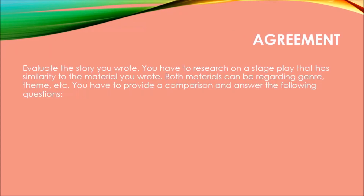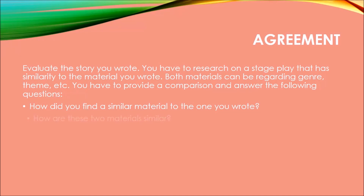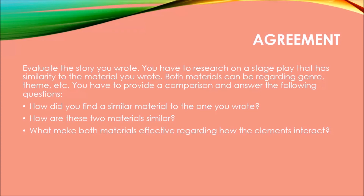For your assignment, evaluate the story you wrote. Research a stage play that has similarity to the material you wrote — both materials can be similar regarding genre, theme, etc. Provide a comparison and answer the following questions: How did you find a similar material to the one you wrote? How are these two materials similar? What makes both materials effective regarding how the elements interact? What are the things that your story needs to improve upon? That is all for our lesson.